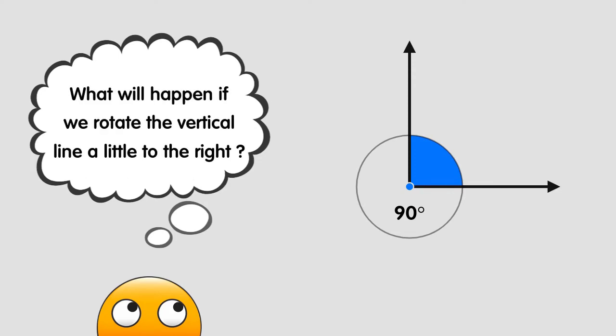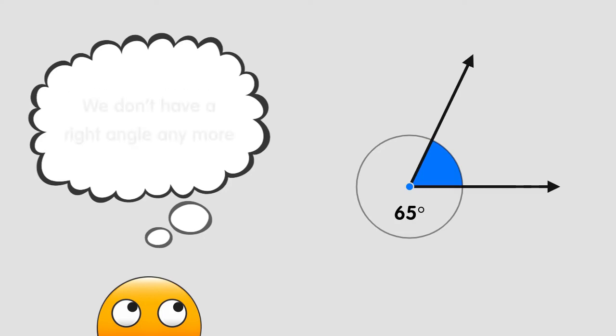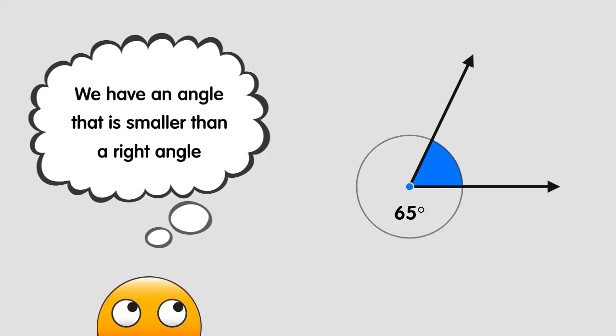What will happen if we take the line pointing up and rotate it like the hand of a clock a little to the right? Well we don't have a right angle anymore. Instead we have an angle that is smaller than a right angle.